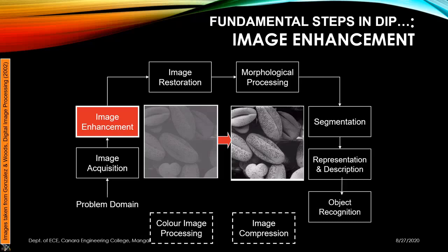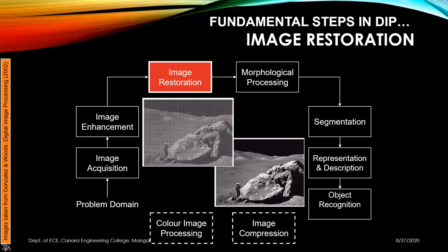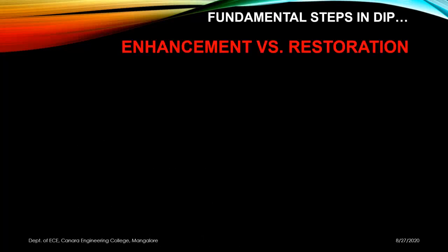Next is image restoration. In image restoration, we know what type of degradation has taken place and we try to restore the image to its clean or original form. In this example, there is a grid-like noise added to the image, and after restoration that grid-like structure is removed, giving a clear image. If you apply frequency domain filtering, you will get a clean output like this.